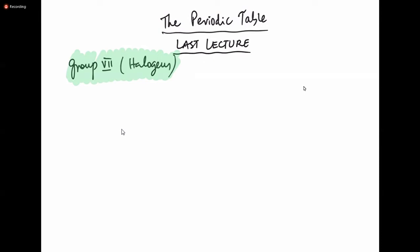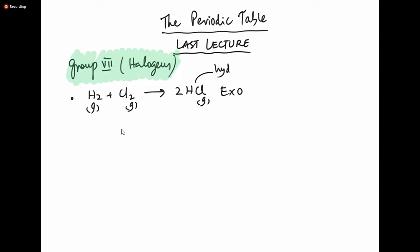These halogens also have the ability to react with hydrogen. For example, hydrogen reacts with chlorine in a very exothermic reaction and energy is released. It produces HCl gas — hydrogen chloride — and you can see white fumes. If you add this HCl gas to water, it forms hydrochloric acid.